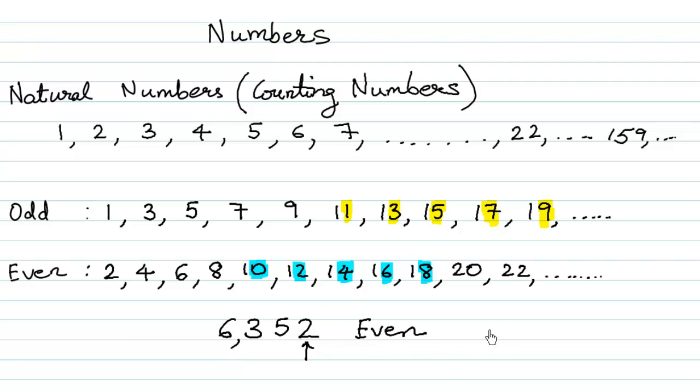But if the last digit is 9, whether I write it as 19 or 319 or 5,319 or 65,319, since the last digit is 9, it is an odd number.